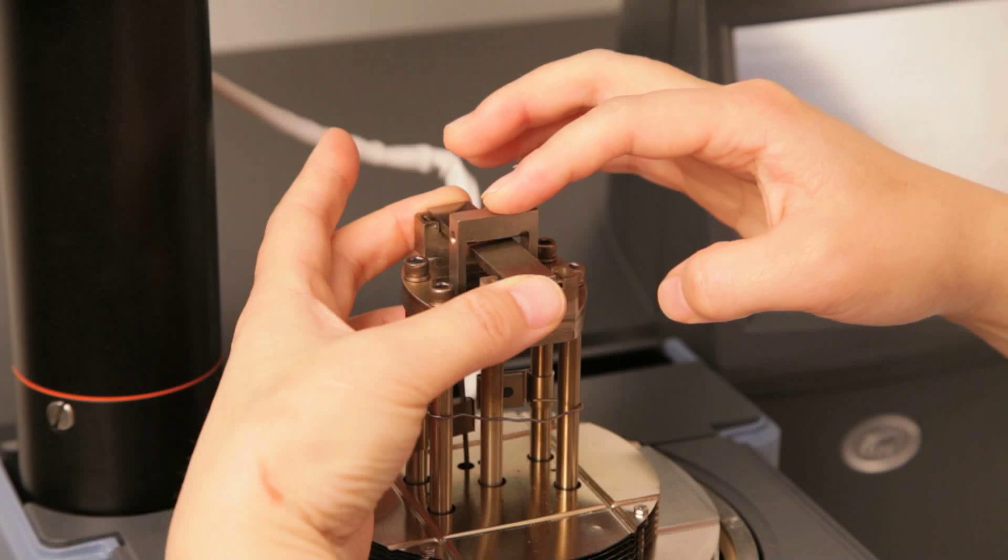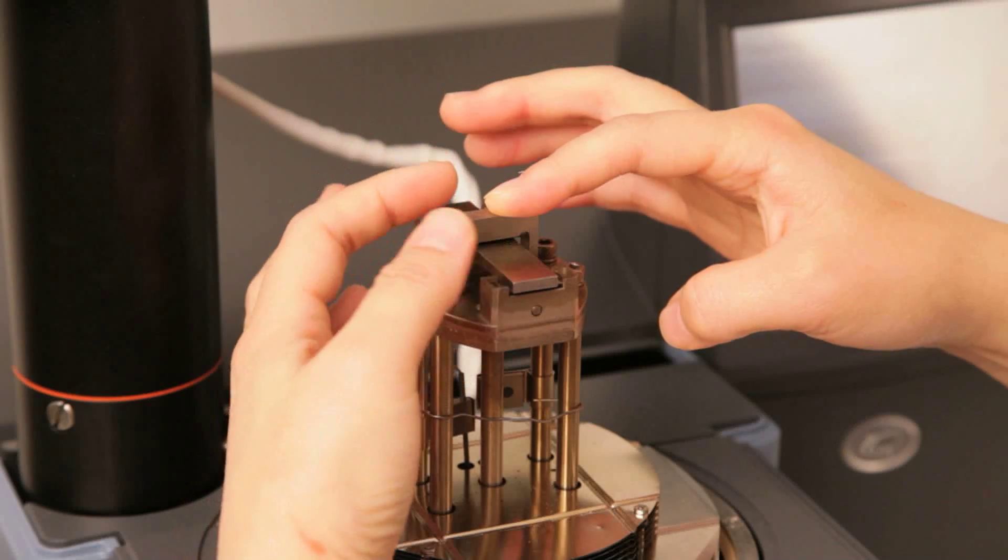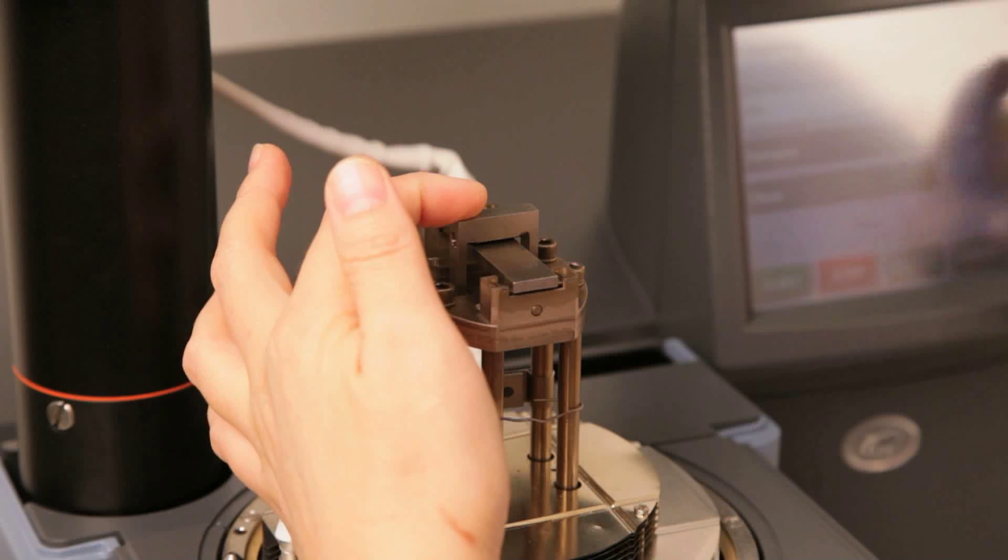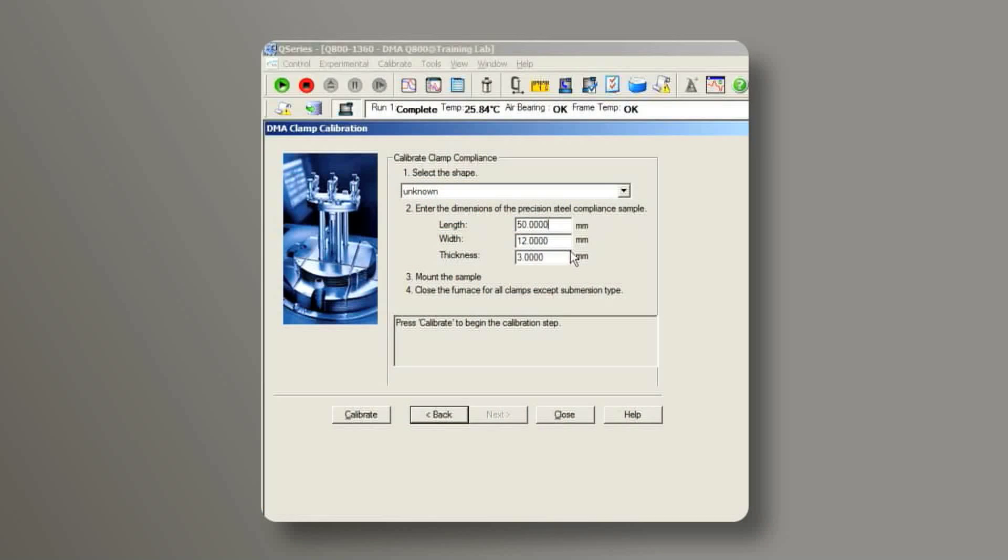Make sure the movable clamp is in touch with the bar, then lock the drive shaft from the touch screen. Enter the dimension of the steel bar to the software.